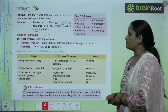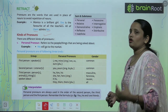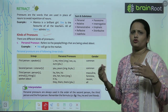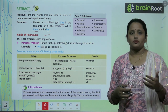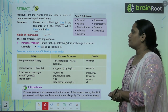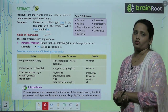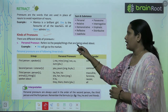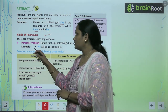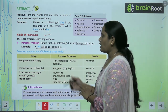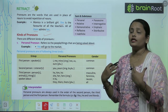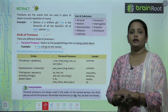The first one is personal pronoun. Personal pronouns talk about ourselves. A personal pronoun refers to the people or things that are being talked about. For example, 'We will go to the market.' Here 'we' includes the speaker, so 'we' is a personal pronoun.